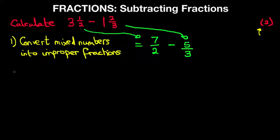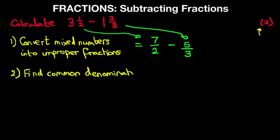Now, the second step is to find the common denominator. We know that the two denominators we have are 2 and 3. Now, simply the common denominator here is 6.